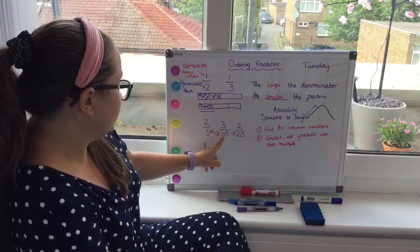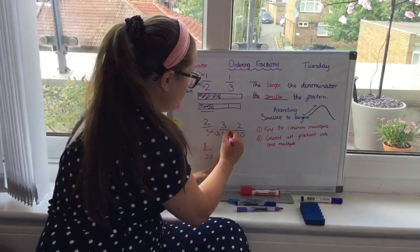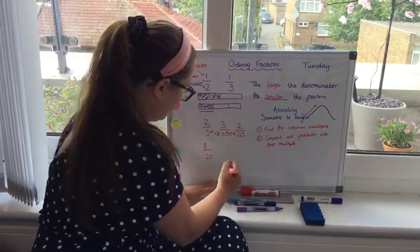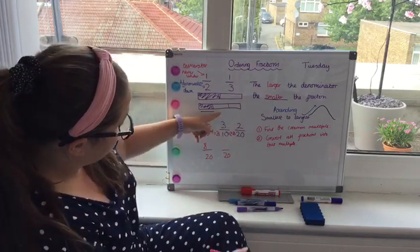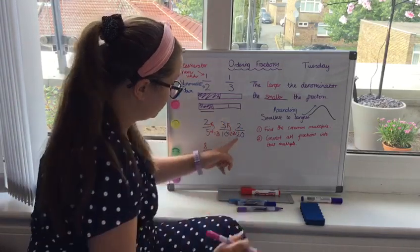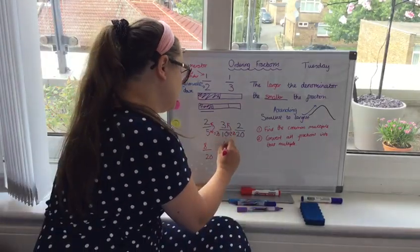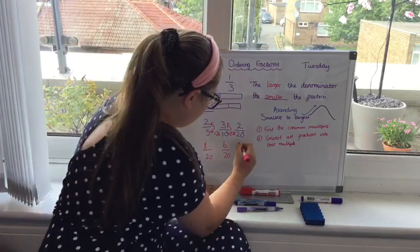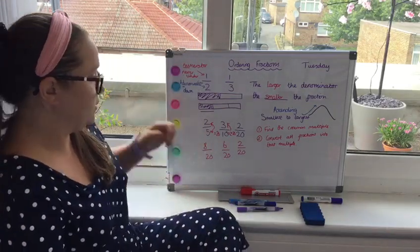So three tenths. I can convert that into twentieths because I know ten times two is twenty. And again, whatever I do to the bottom, I have to do to the top. So I've also got to times the top by two. So three times two is six. So now I've got two twentieths, six twentieths and eight twentieths.